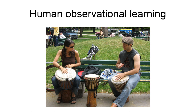Albert Bandura claims that children continually learn desirable and undesirable behavior through observational learning. Observational learning suggests that an individual's environment, cognition, and behavior all incorporate and ultimately determine how the individual functions and models. Through observational learning, individual behaviors can spread across a culture through a process called diffusion chain, occurring when one individual learns a behavior by observing another, who then serves as a model for others.